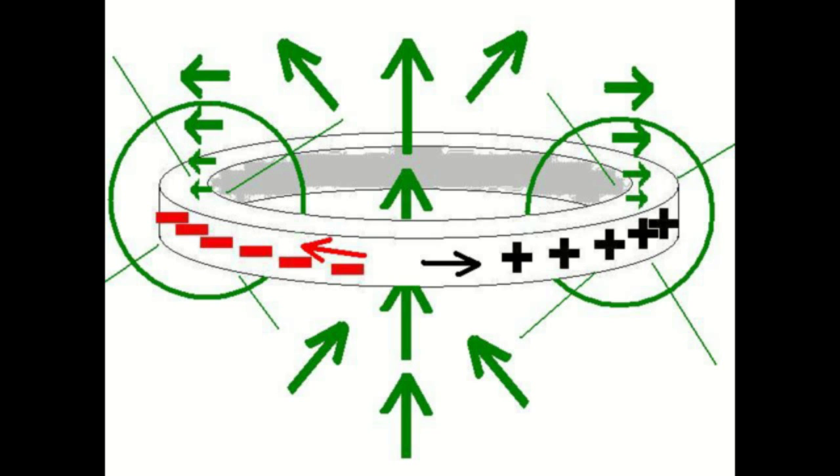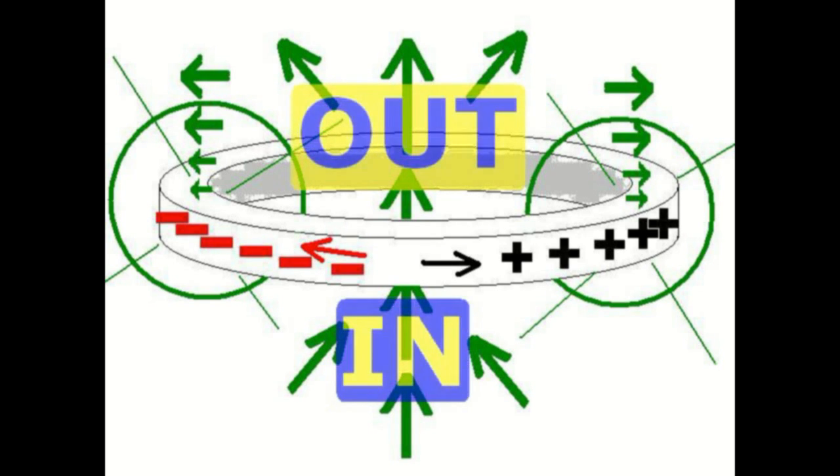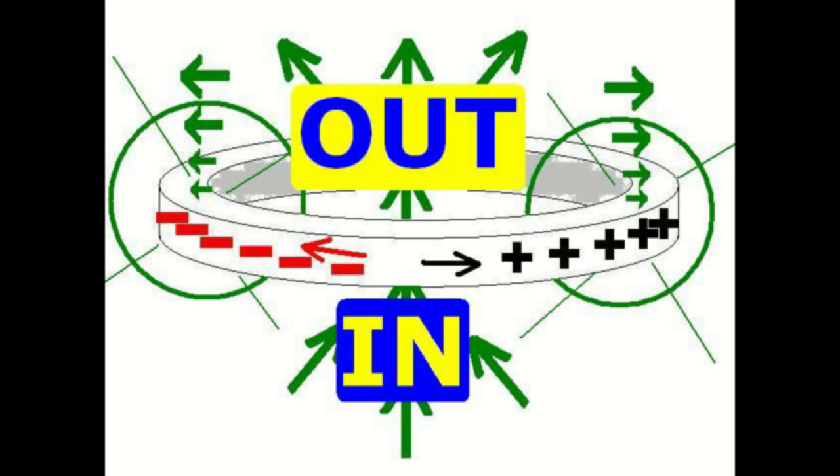This would form a toroidal field with an input and output hole through the axis of the donut. In the input hole, it would suck things up gravitationally rather than magnetically, while from the output hole, it would blow things away, gravitationally rather than magnetically.